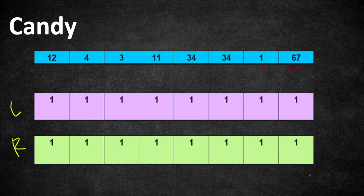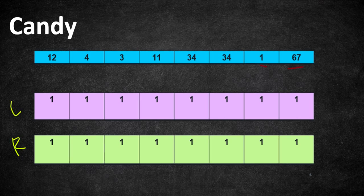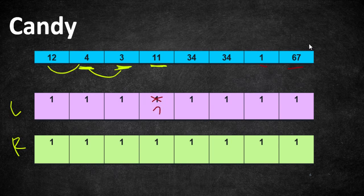We start by filling both arrays with one, since all children must have at least one candy. Now let's fill the left array by comparing adjacent neighbors left to right. Comparing 12 and 4: 4 has a lesser rating than 12, so 4 doesn't need extra candies. Moving to 3: 3 is less than 4, so no extra candies needed. Moving to 11: 11 is higher than 3, so we give 11 one extra candy — filling that position with 2. Moving to 34: 34 is higher than 11, so we fill it with 3.